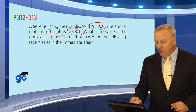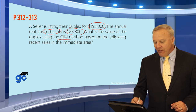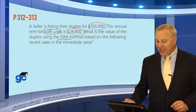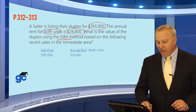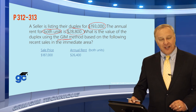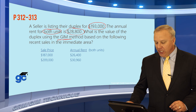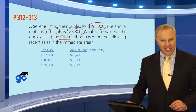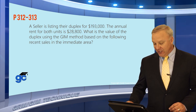The question is: what is the value of the duplex using the gross income multiplier method, based on the following recent sales in the immediate area? Property one sold for $187,000 with an annual rent of $26,400. Property two sold for $209,000 with an annual rent of $30,960, and property three sold for $179,000 with an annual rent of $24,960.